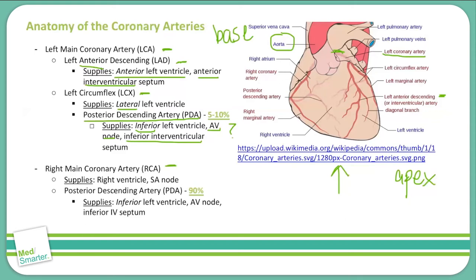Now let's look at the right side. The right main coronary artery supplies the right ventricle and the SA node. It's really important to remember that the SA node is supplied by the right main coronary artery, because an occlusion of the RCA can generate an arrhythmia. As mentioned, approximately 90% of the population has the posterior descending artery branching off of the right main coronary artery.